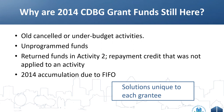Why do you still see 2014 grant funds when you may have long ago completed your 2014 action plan activities? There are several reasons. First, your community may have canceled an activity or completed one under budget — the unused budget would be released into the line of credit and perhaps never reprogrammed. Another reason is that your jurisdiction may have returned funds to HUD, which entered the credit in IDIS under activity number two, and if no one ever applied that credit back, those funds may still be stuck in activity two.